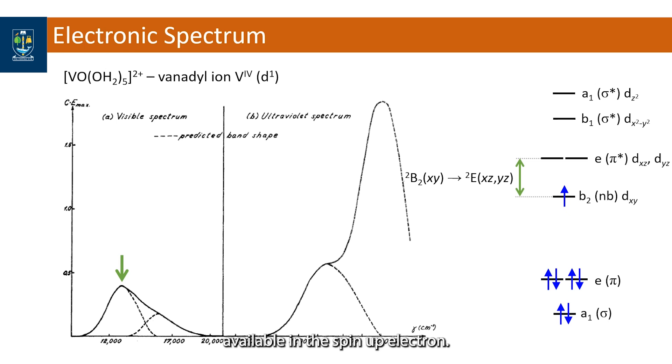With two spaces available in the spin-up electron this band is twice as intense as the next transition which is assigned as a doublet B2 to doublet B1 from the ground state up to the dx squared minus y squared orbital.